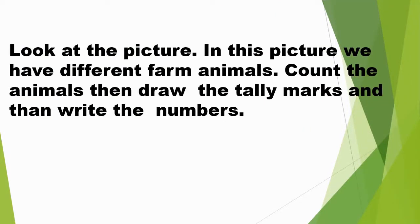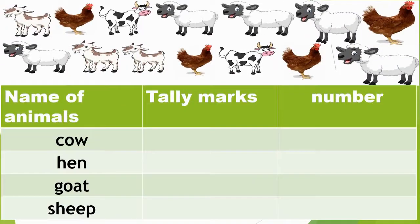Now student, look at the picture. In this picture we have different farm animals. Count the animals, then draw the tally marks, and then write the numbers. We have animals like cow, hen, goat, and sheep. First we will count how many cows there are: 1, 2. There are 2 cows. I will draw 2 tally marks, and the number is 2.